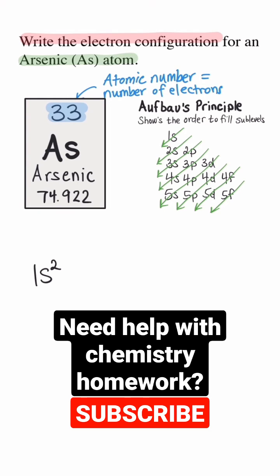Follow the next arrow, and we see that the next sublevel is the 2s. It's still an s sublevel and can hold a maximum of 2 electrons. Follow the next arrow, and I'll need to write 2p. A p sublevel can hold a maximum of 6 electrons.